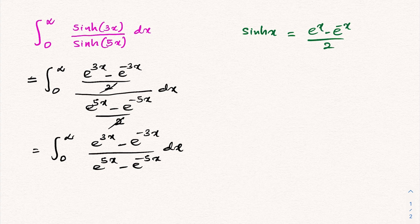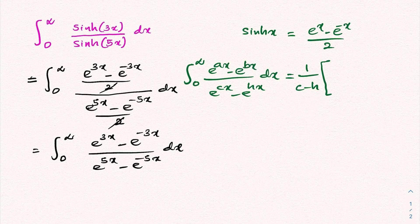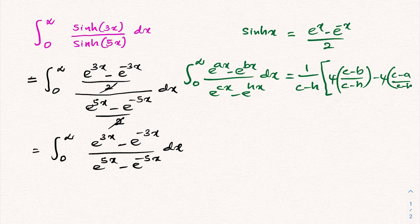I generalized this type of integral in a previous video. The general form is the integral from 0 to infinity of (e^(ax) minus e^(bx)) over (e^(cx) minus e^(hx)) dx. I will add the link in the description. We proved this integral equals 1/(c minus h) times [digamma of (c minus b)/(c minus h) minus digamma of (c minus a)/(c minus h)].